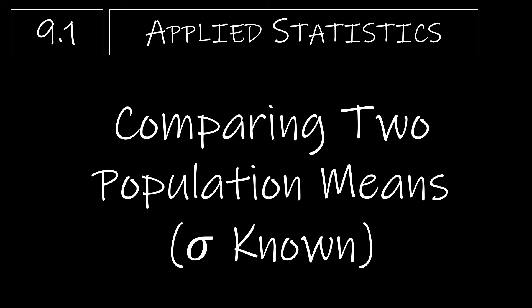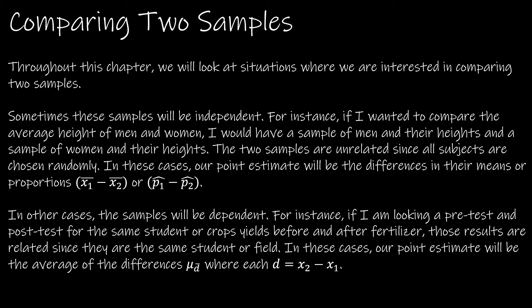We're now beginning chapter 9, and chapter 9 will build on what we learned in chapter 8. Everything in chapter 9 will be similar to chapter 8, except that we will be comparing two means or two proportions throughout this chapter. We're going to take a look at situations where we want to compare two samples, and the biggest thing you're going to want to look for — because the calculations will be different — is whether or not those samples are independent or dependent.